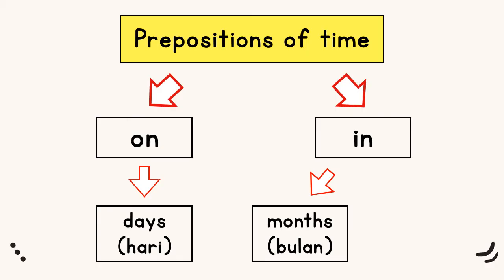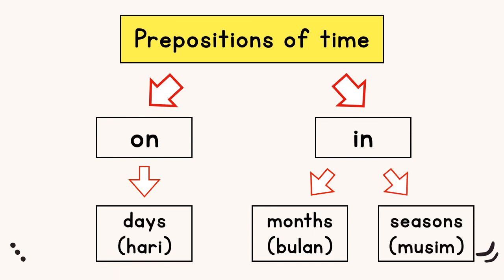Before we end our lesson today, let us recall. Prepositions of time — we have two: ON and IN. ON is for days, and IN is for months and seasons. On untuk hari, in untuk bulan dan musim.